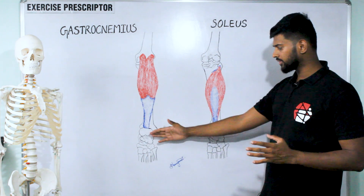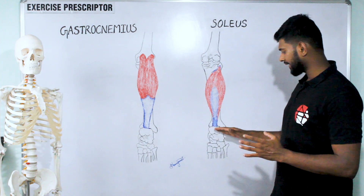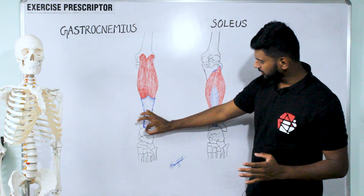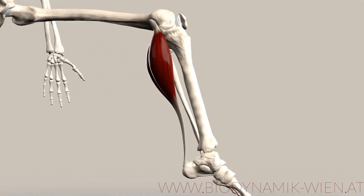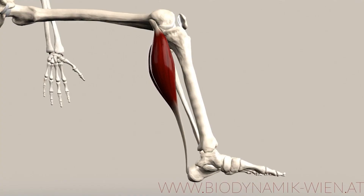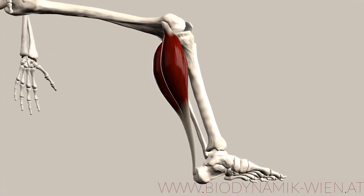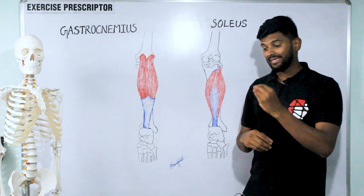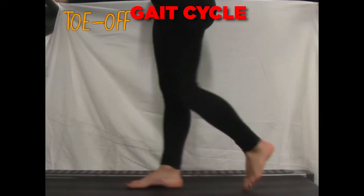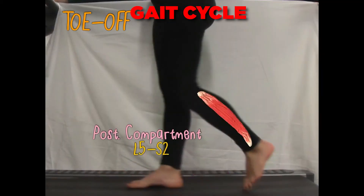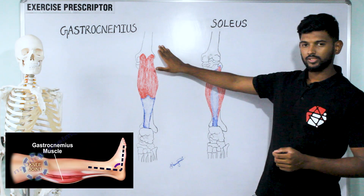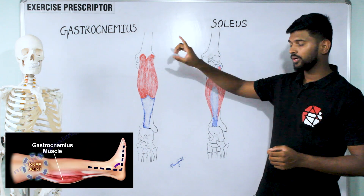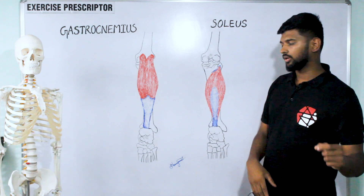Both muscles attach over the calcaneus. When the muscle fibers pull, they create plantar flexion of the ankle joint. This plays an important role in the gait cycle during the push-off phase. As mentioned, gastrocnemius also attaches to the knee joint, so it has a role there as well.